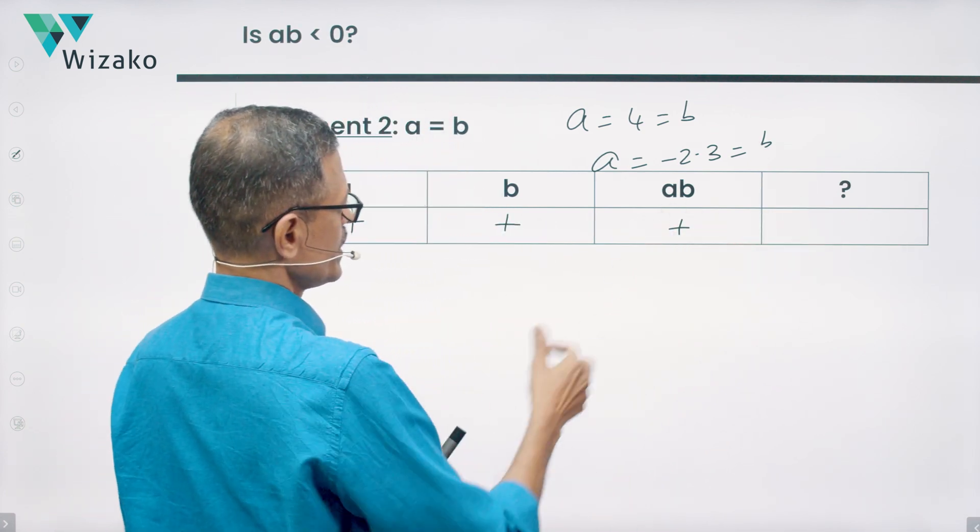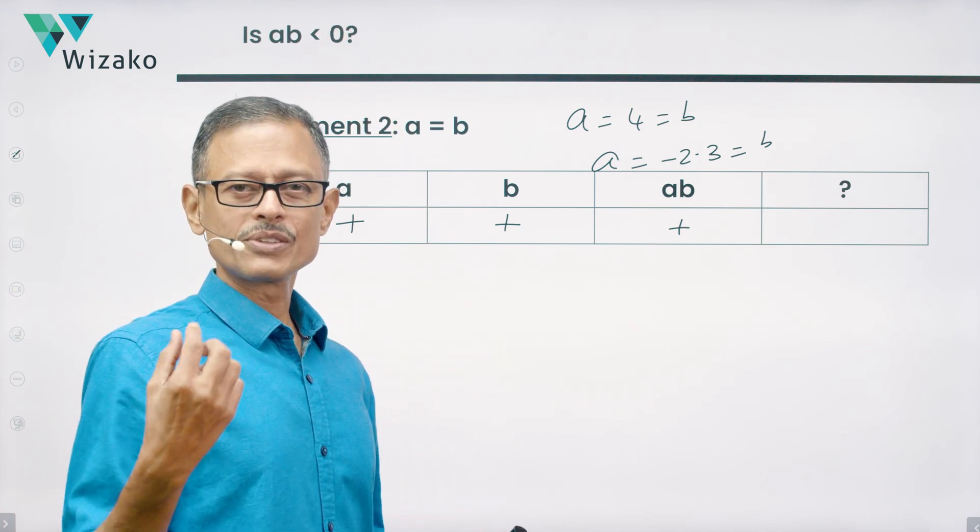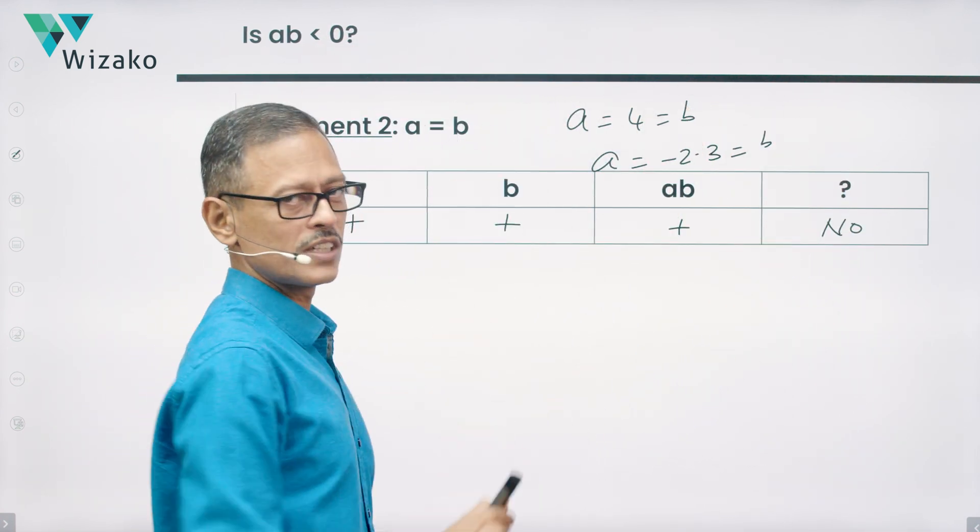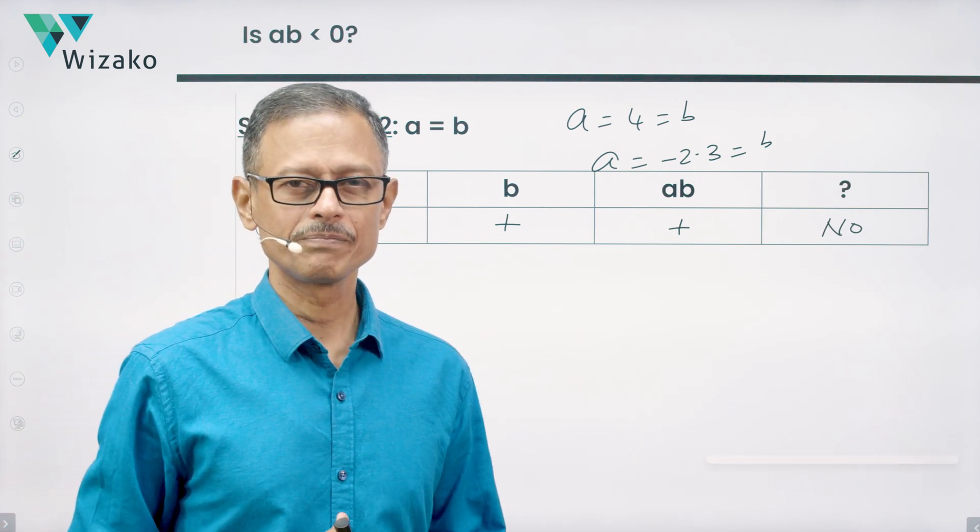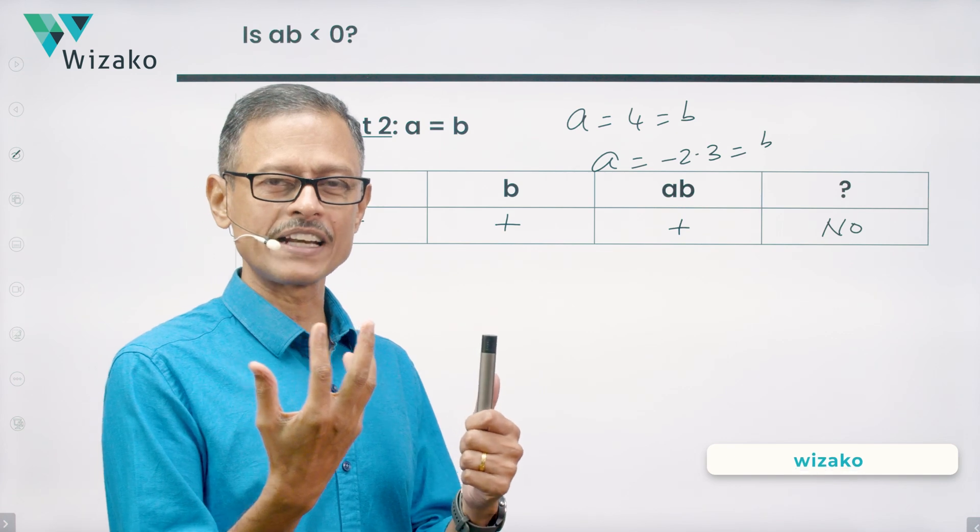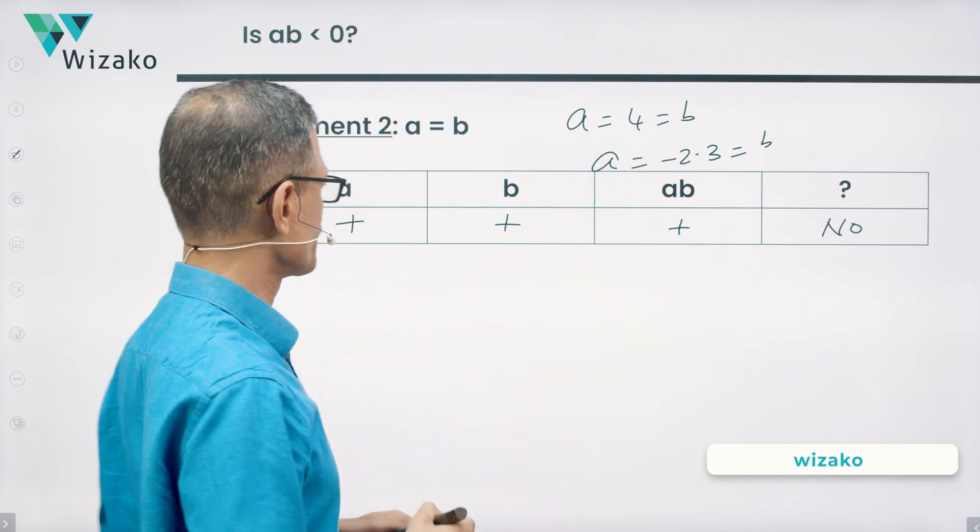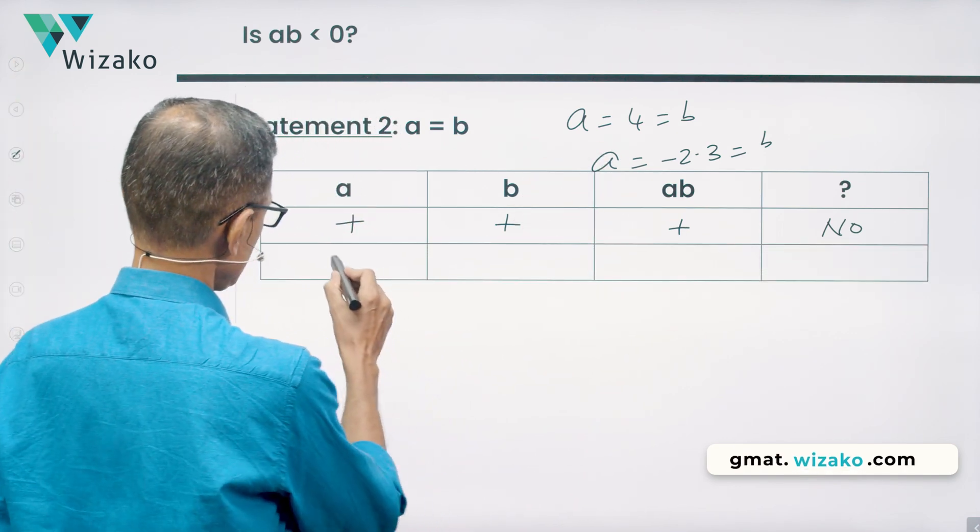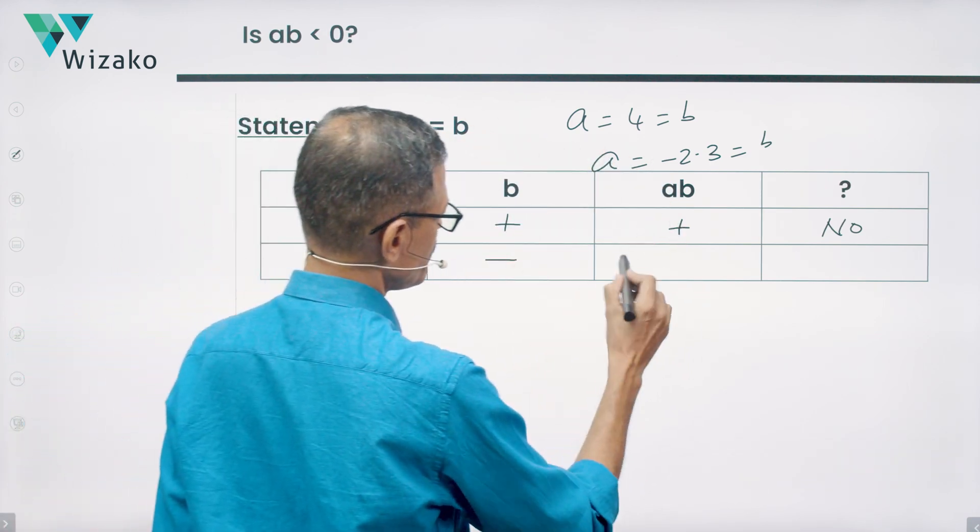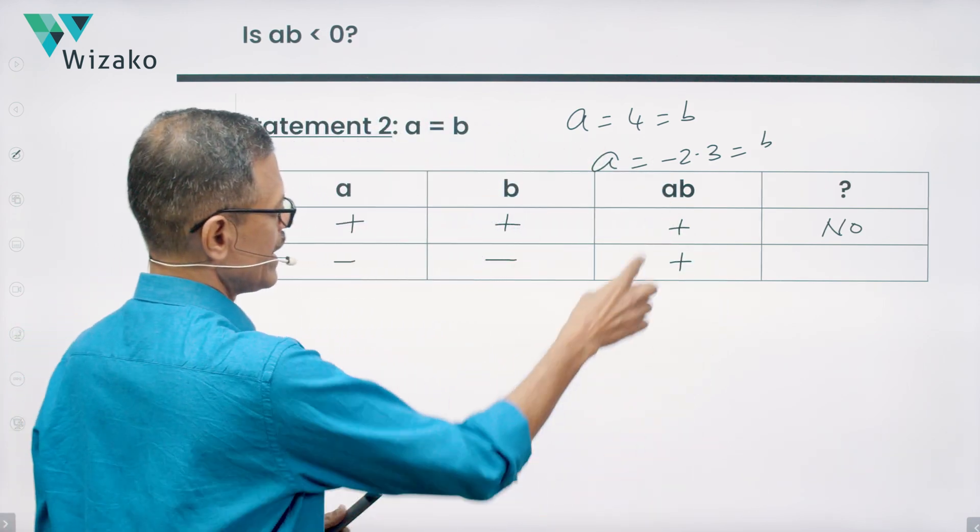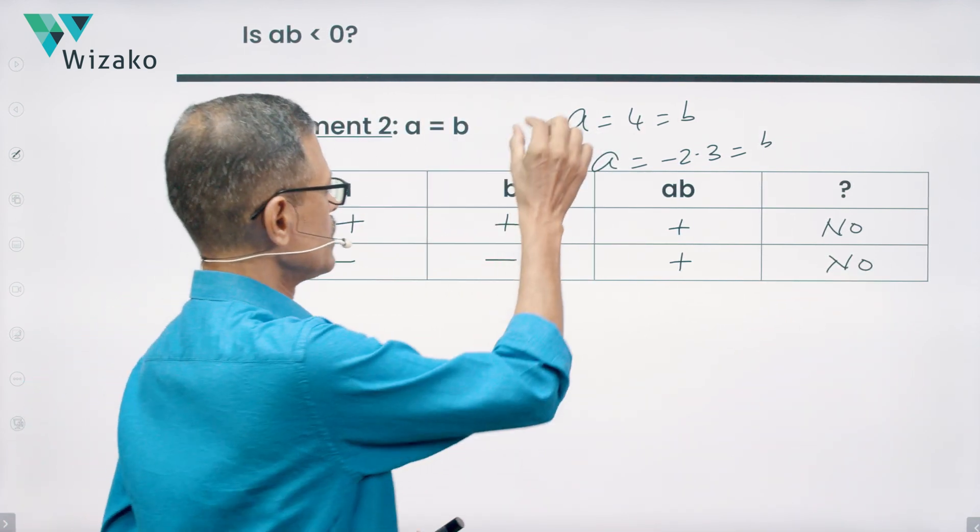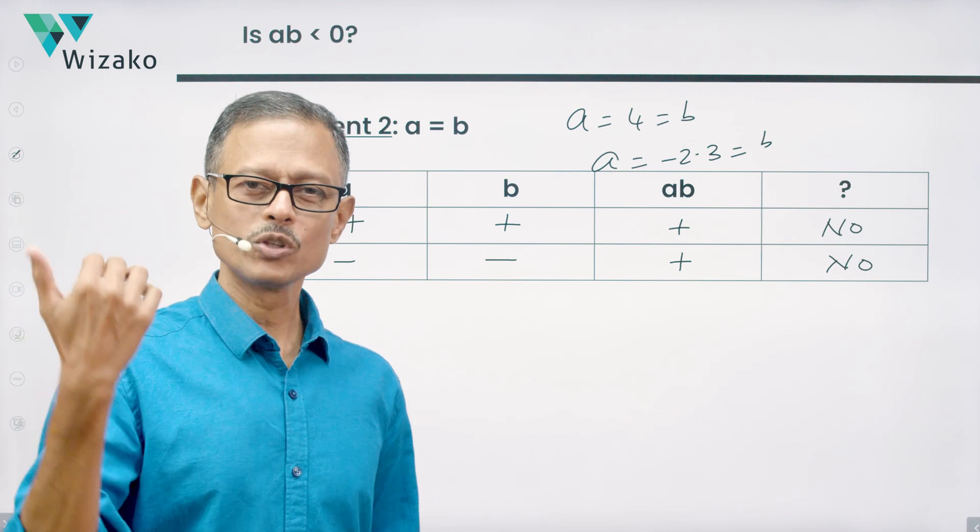The product of two positive numbers is positive. The answer to our question, if AB is positive, then is AB negative? We're going to answer it with a no. So scenario one, when both are positive, we've got no as the answer. Let's see whether we're getting a uniform no or we get no sometimes and yes sometimes. That will help us determine whether the statement is sufficient or not. Both could be negative. If A is equal to B, if A is a minus 2.3, B will also be a minus 2.3. The product of two negative numbers is also positive. If AB is positive, we don't even have to spend any more time. We know that the answer is a no.